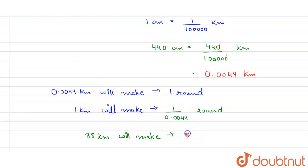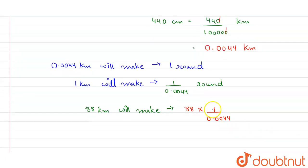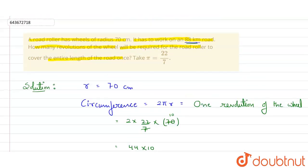So 88 multiply with 1 upon 0.0044. To make our calculation easy, skip this point and multiply with 4 zeros. Now 88 is 11×8, 44 is 11×4, so it will take 2, and 4 zeros here. So it will be 20,000 rounds. Road roller of radius 70 centimeter will take 20,000 rounds to cover 88 kilometer. This is our final answer, thank you.